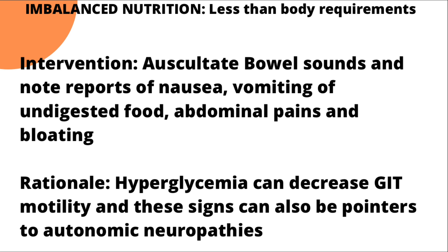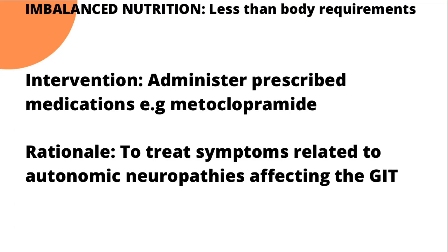Once the patient is eating the right quantity and nutrients, be vigilant for autonomic neuropathies. Always auscultate bowel sounds and assess for reports of nausea, vomiting, undigested food, abdominal pain, and bloating — these can result from decreased motility caused by hyperglycemia. Finally, administer prescribed medications such as metoclopramide, which may be prescribed to treat symptoms of autonomic neuropathies, ensuring you follow the rights of drug administration: right dose, route, time, patient, and check for adverse effects.